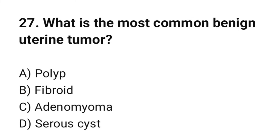Question number 27. What is the most common benign uterine tumor? The correct option is B: Fibroid.